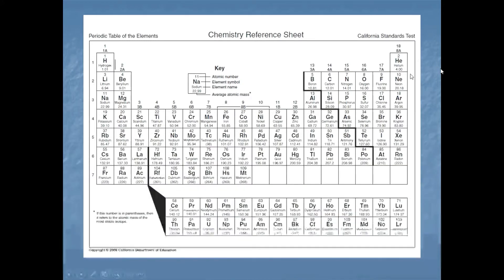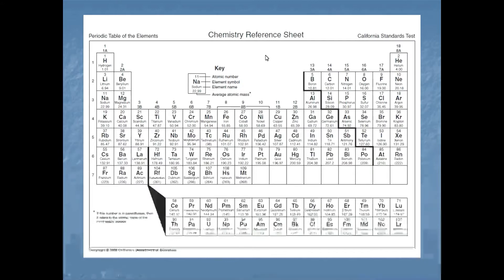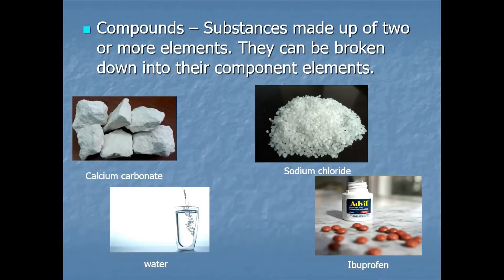Number 2 is helium, and all the entries on the periodic table are elements — they are the simplest kinds of substances. When you have a sample of an element, every atom in that sample is the same kind of atom.